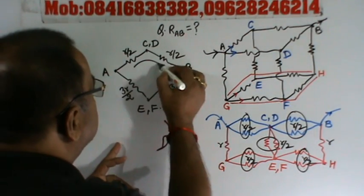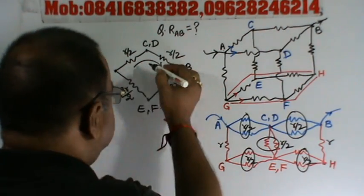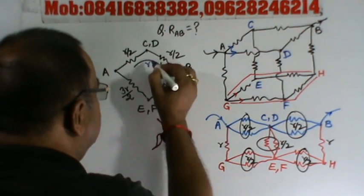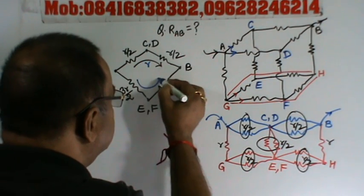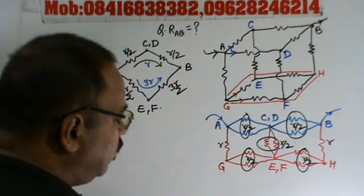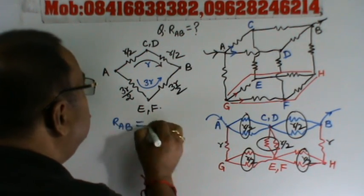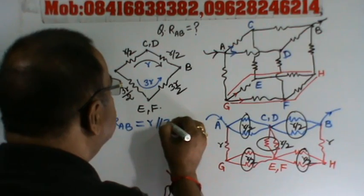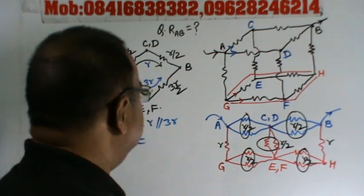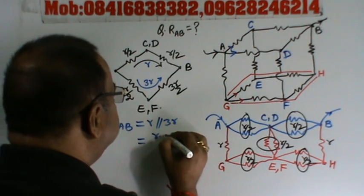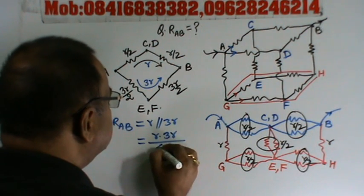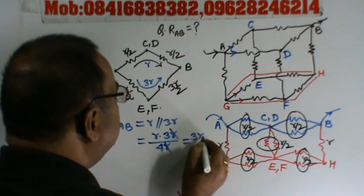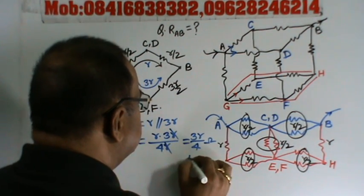So what will be R_AB? The CD branch gives R/2 plus R/2, that is R. The EF branch gives 3R/2 plus 3R/2, that is 3R. So R_AB equals R in parallel with 3R. Using the product-over-sum formula: R × 3R divided by R plus 3R equals 3R² divided by 4R, which gives 3R/4 ohms. This is the answer to the problem.